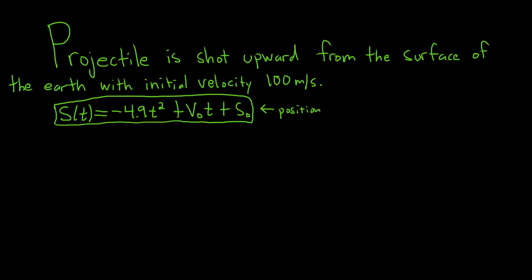Hi everyone. In this problem we're going to do a problem involving velocity. A projectile is shot upward from the surface of the earth with initial velocity 100 meters per second, and we're given the position at time t in meters of this projectile.